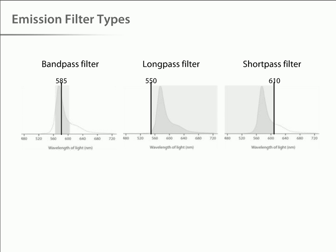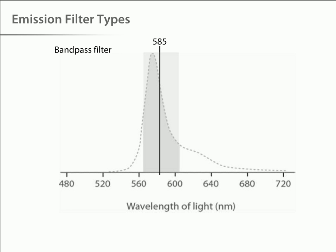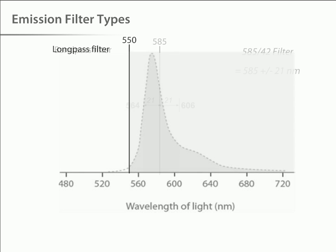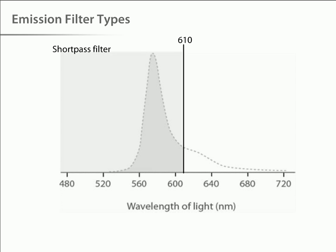Let's take a moment to talk about filter nomenclature. Filters are normally defined by one of two parameters, either the center point for a bandpass filter or the cutoff point for a long or short pass filter. This is a typical bandpass filter specific for RPE. It has a center point of 585 nanometers and a width of 42 nanometers. So this filter optimally passes light in the wavelength range of 564 to 606 nanometers, which corresponds to the emission peak of RPE. Other filters used to resolve this peak include a 550 nanometer long pass filter and a 610 nanometer short pass filter.